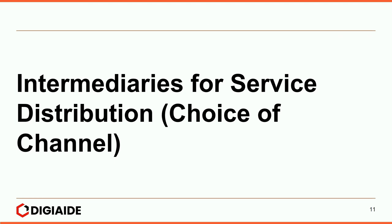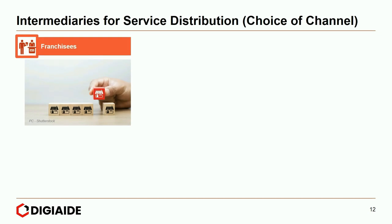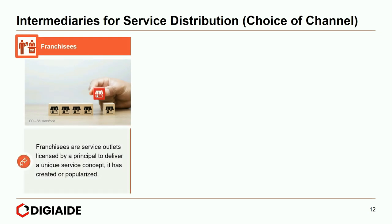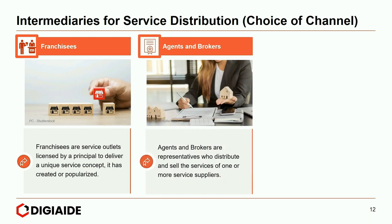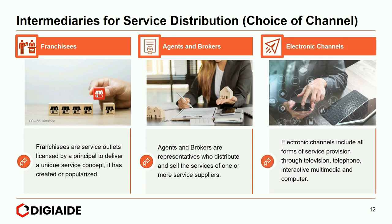Next, intermediaries for service distribution — the choice of channel. A service distribution channel refers to the sequence of intermediaries involved in moving the service from the producer to the customer. The popularly used channels of distribution are: first, franchises — service outlets licensed by a principal to deliver a unique service concept, for example McDonald's uses franchises all over the world. Next, agents and brokers — representatives who distribute and sell the service of one or more service suppliers. And finally, electronic channels — which include forms of service provision through television, telephone, interactive media and computer. Many financial and information services are currently distributed through electronic media such as banking, bill payment and education.